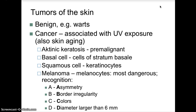Melanoma is recognized using the ABCDE criteria. A — Asymmetry: the mole is not perfectly round, having an oval or irregular shape. B — Border irregularity: notches or indentations. C — Color: uneven, with several colors possibly present including black, brown, tan, red, or blue. D — Diameter: larger than six millimeters. E — Evolving: the mole has changed in size or shape over time.